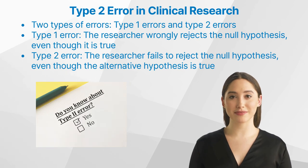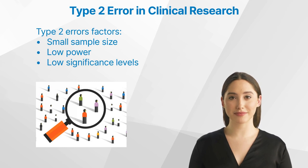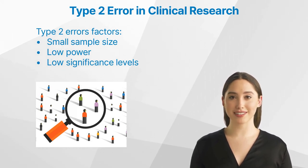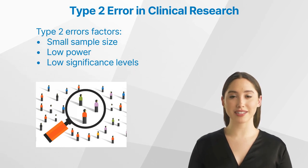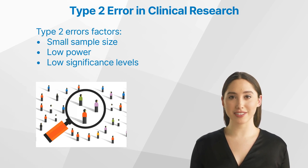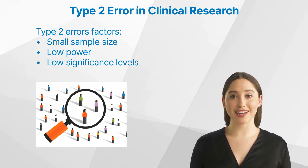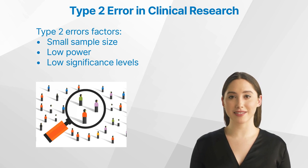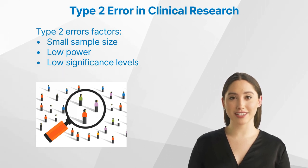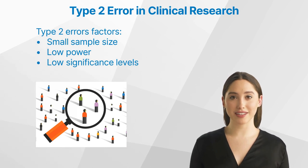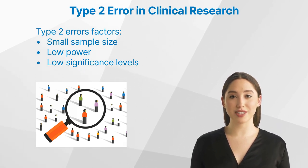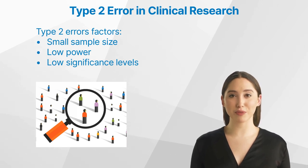What are the causes of Type 2 error? Type 2 errors can be caused by several factors such as small sample size, low power, and low significance levels. Sample size is an important factor — the larger the sample size, the less likely a Type 2 error will occur. The power of a statistical test is also important; it is the probability that the test will correctly reject the null hypothesis when it is false. Higher power reduces the chances of making a Type 2 error. Finally, the significance level, or alpha level, is also important — increasing the significance level reduces the chances of making a Type 2 error.